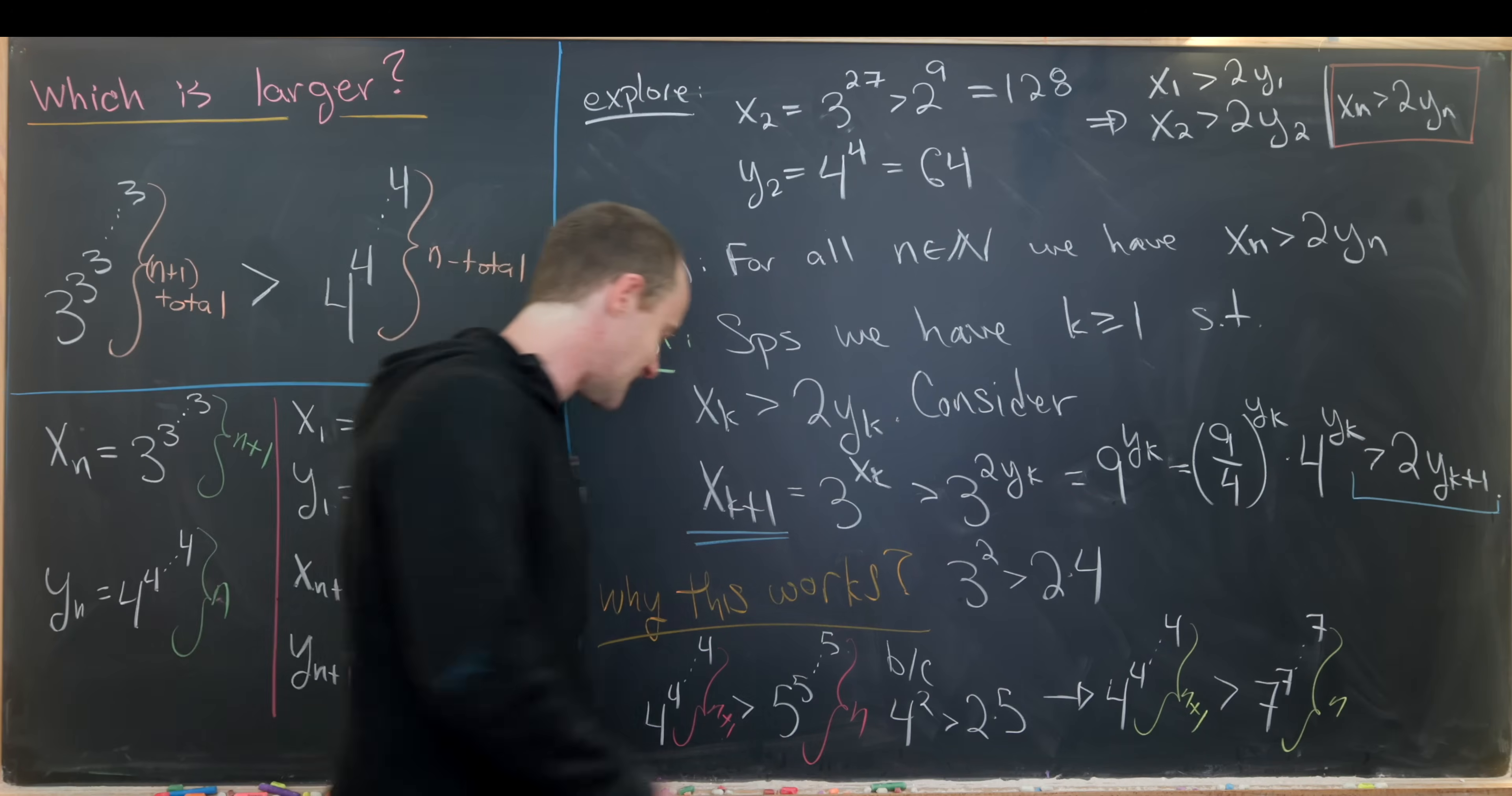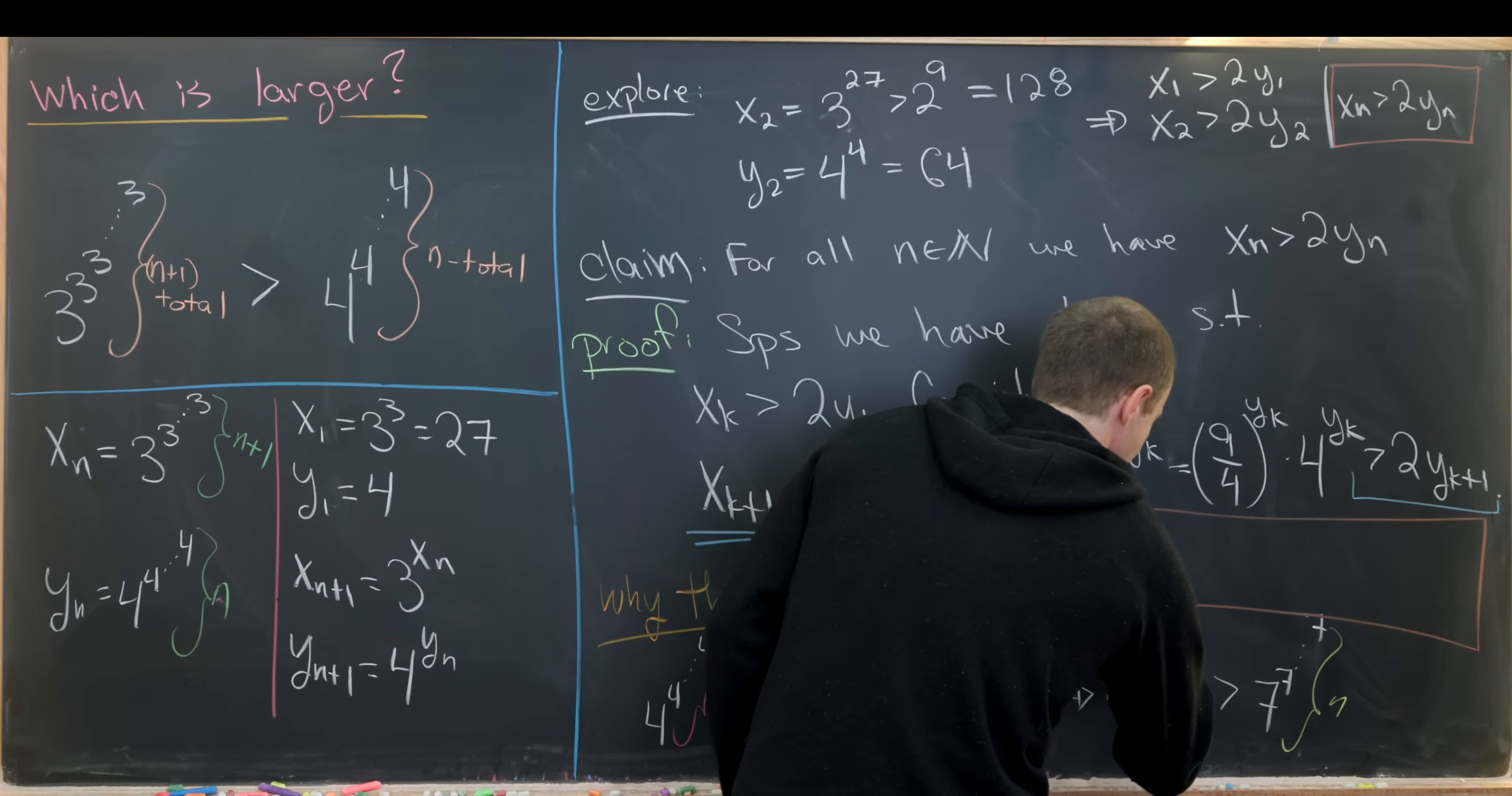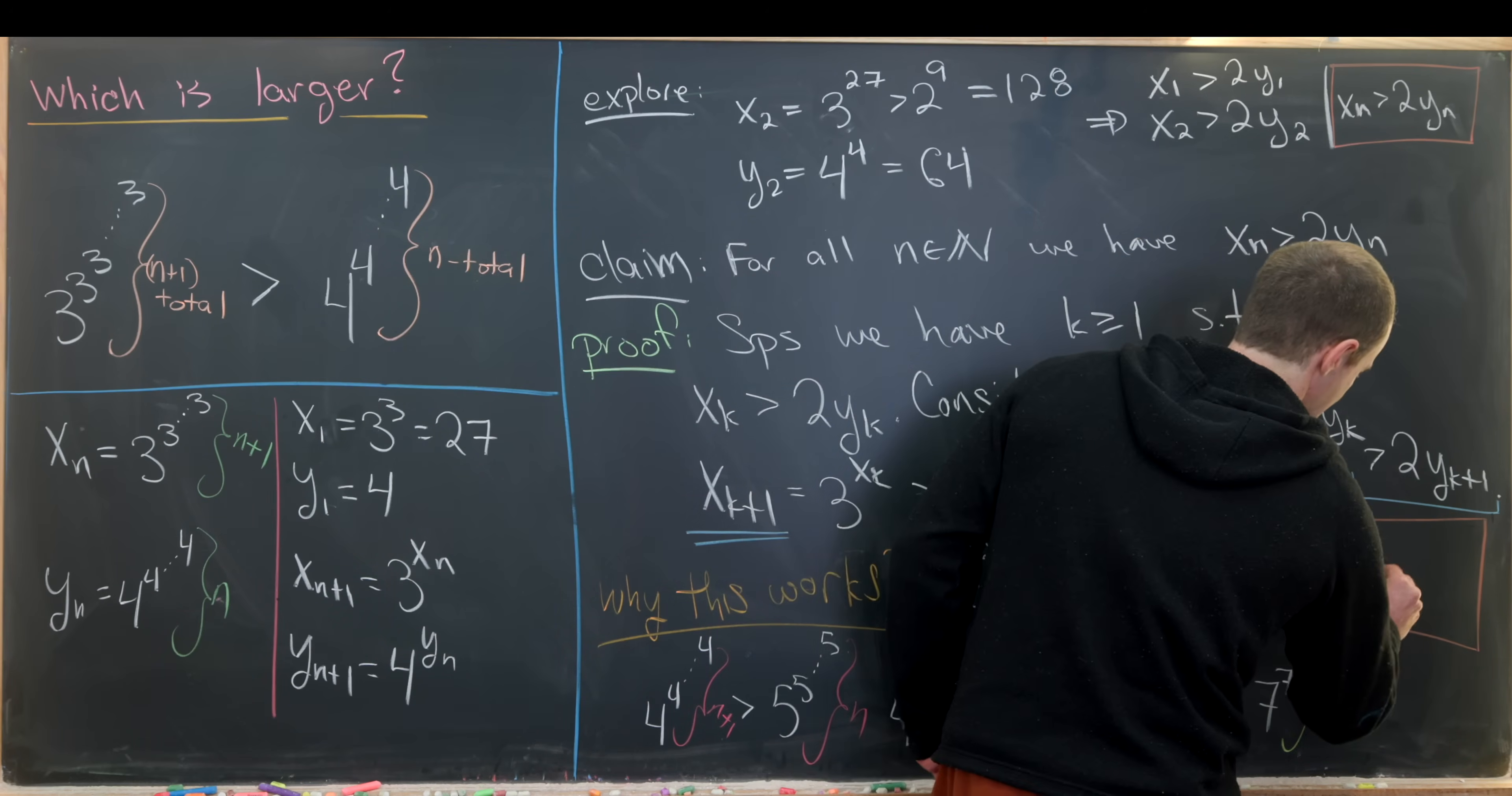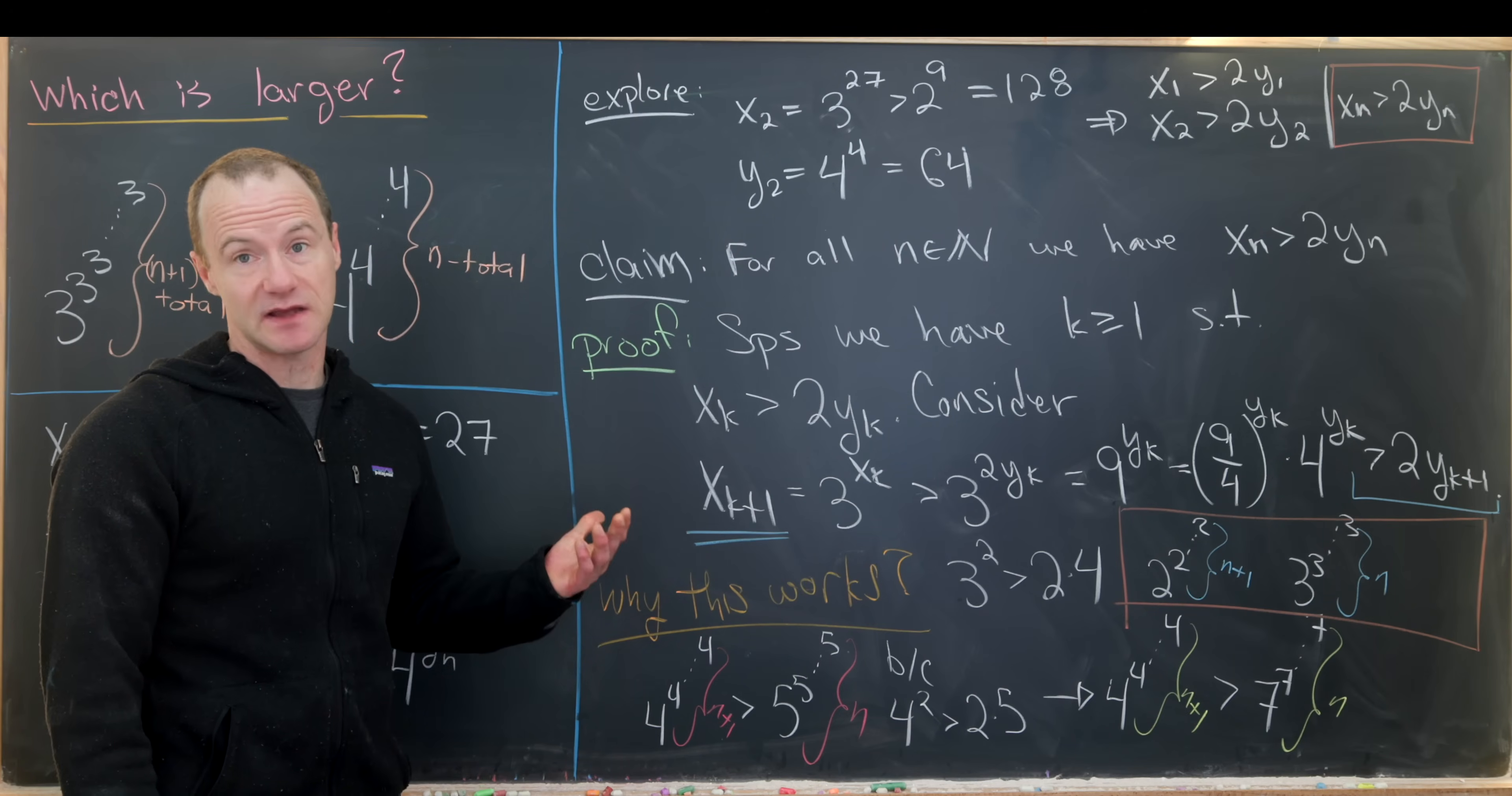Now the interesting thing here is that this type of strategy does not quite work if we go backwards, and that is if we compare 2 to the 2 all the way up versus 3 to the 3 all the way up, where here again we have n plus 1 twos and n total threes. So notice 2 squared is equal to 4, but 4 is not bigger than 2 times 3.